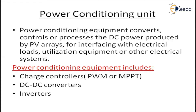Next is power conditioning units. Power conditioning units convert, control, and process the DC power produced by the PV array for interfacing with electrical loads, utilization equipment, or other electrical systems. Whatever control and conditioning of power we obtain from the PV system is done by the power conditioning unit. This includes charge controllers — PWM (pulse width modulation) or MPPT controllers — DC-DC converters, inverters, and battery chargers.